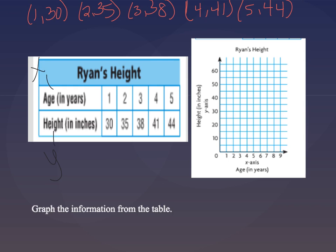Alright, so I have gone and written out all of the ordered pairs that you should have from this table: 1, 30, 2, 35, 3, 38, 4, 41, and 5, 44.